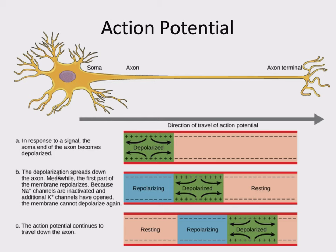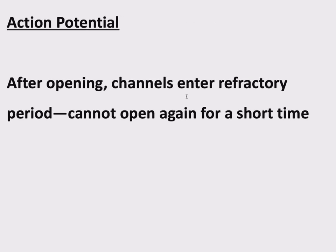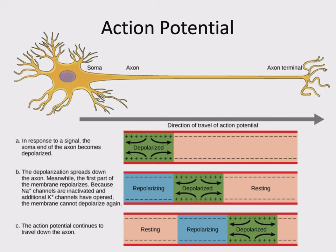One last point: once a region of the neuron has depolarized, repolarized, and returned to resting, it's important that it's not accidentally re-triggered by the nearby depolarization. You don't want the signal to go backwards. After a region goes through this process, it enters a refractory period — it won't respond to nearby voltage changes for a short time. This prevents backtracking: the signal is always supposed to travel in only one direction.